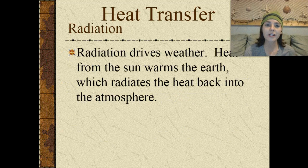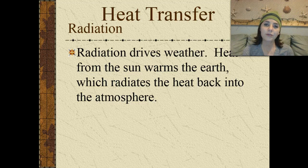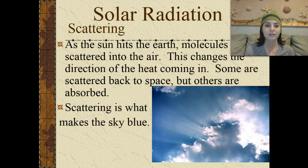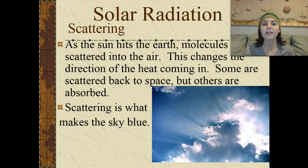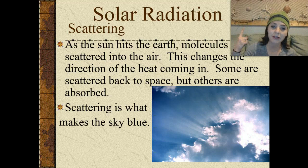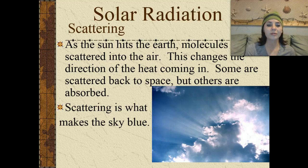We also have radiation, and radiation is what drives weather. Heat from the sun actually warms the earth, and it radiates back into the atmosphere. We also have a scattering effect. As the sun hits the earth, molecules are scattered into the air, and this changes the direction of heat coming in. Some are scattered back up into space, but others are absorbed. This is actually what makes the sky blue.